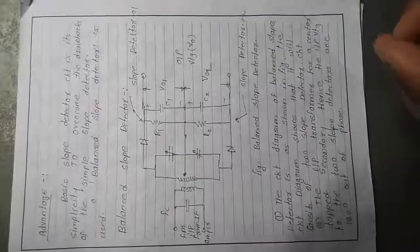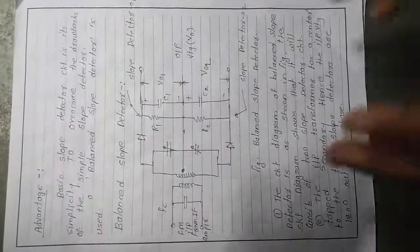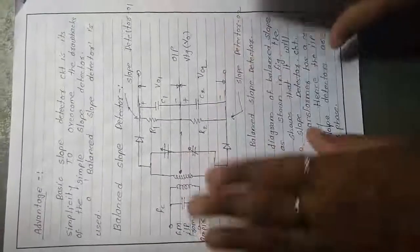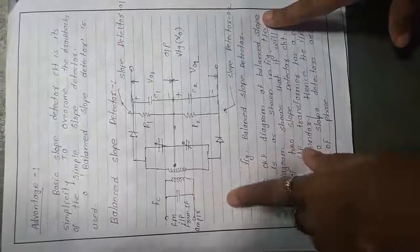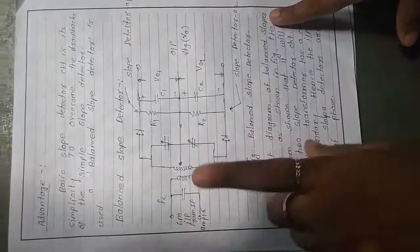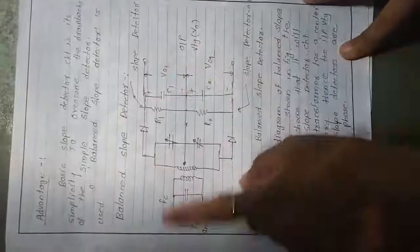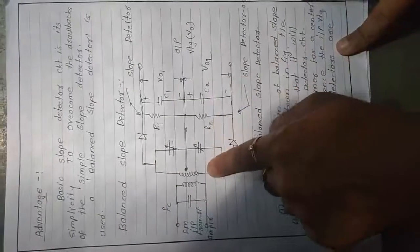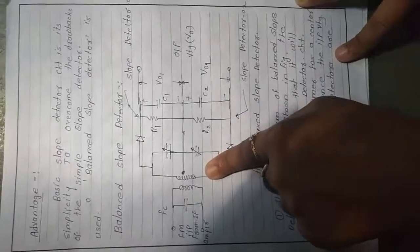What is the basic difference between the simple slope detector and balanced slope detector? There is no fundamental difference — the balanced slope detector is simply the advanced version of the simple slope detector. In the balanced slope detector circuit diagram, you can observe that the first part is related to simple slope detector 1 and another part is related to simple slope detector 2.